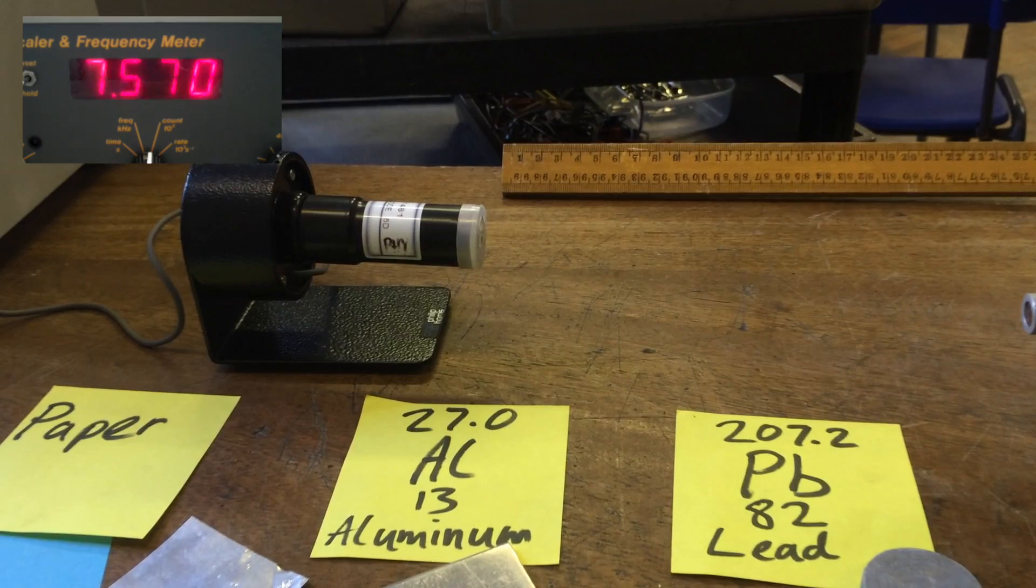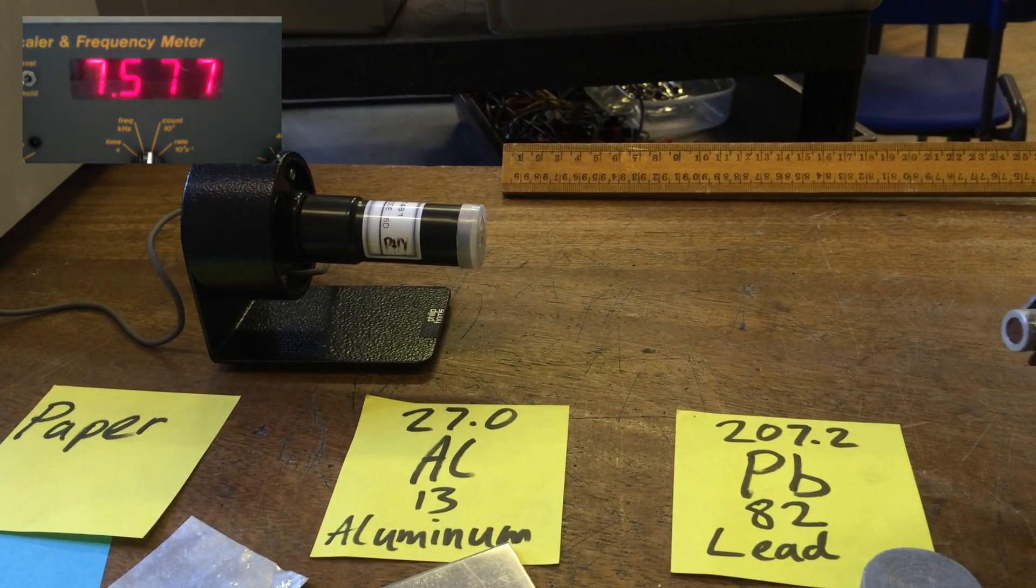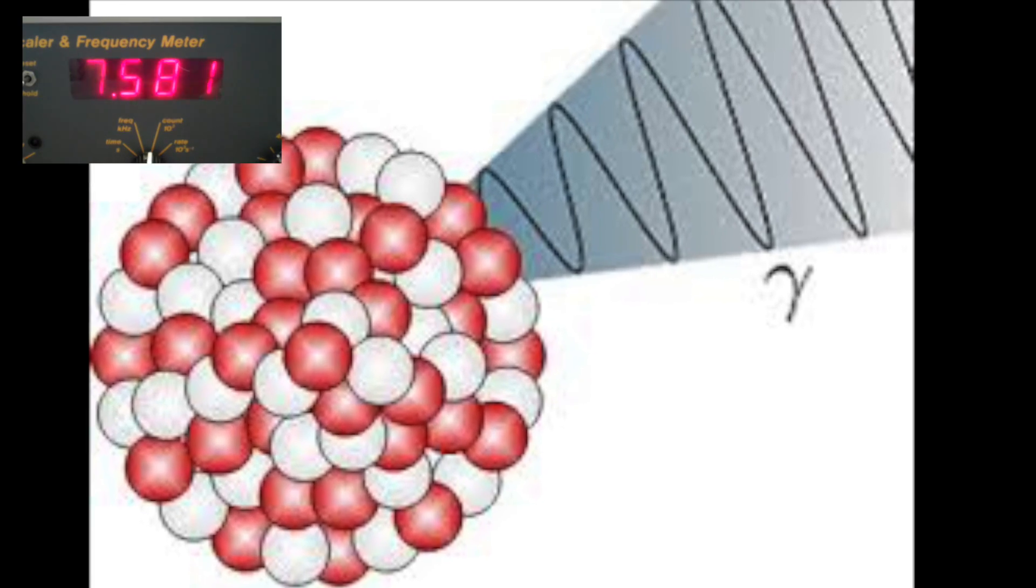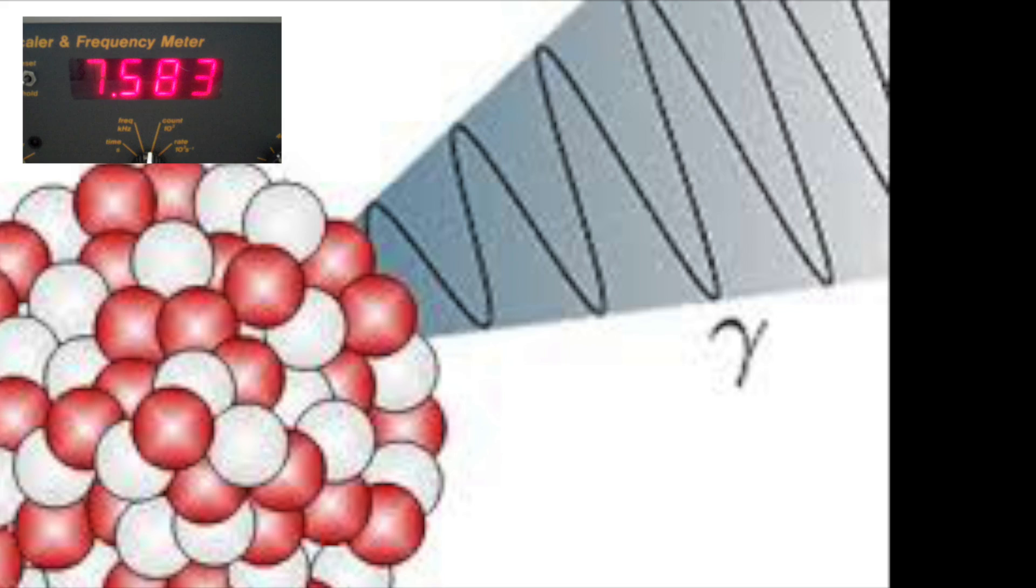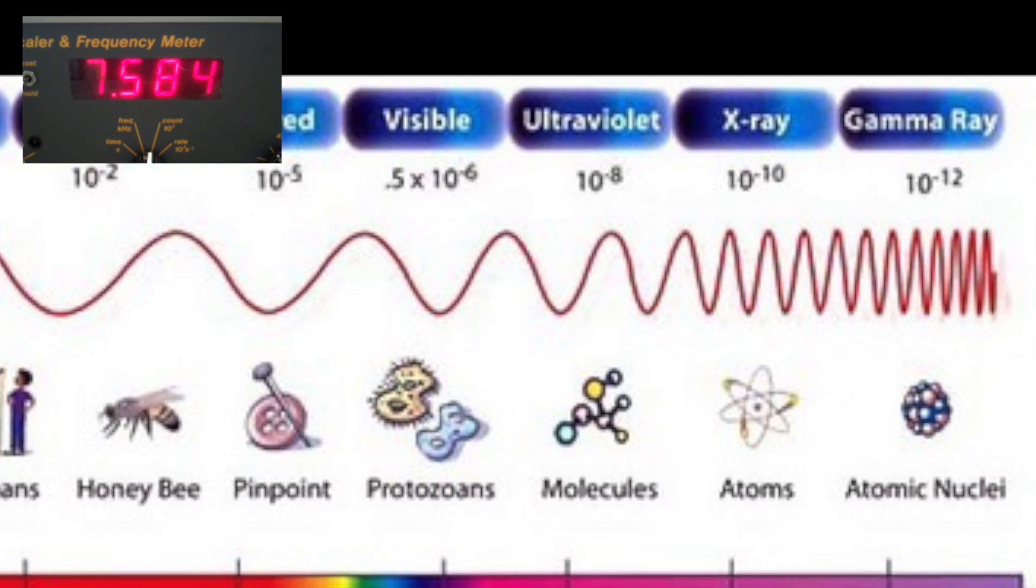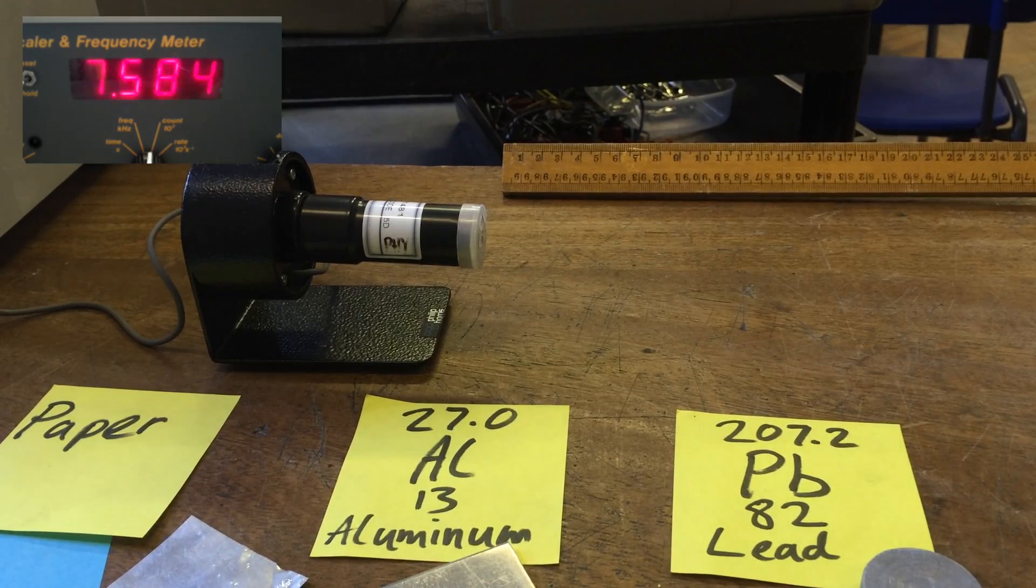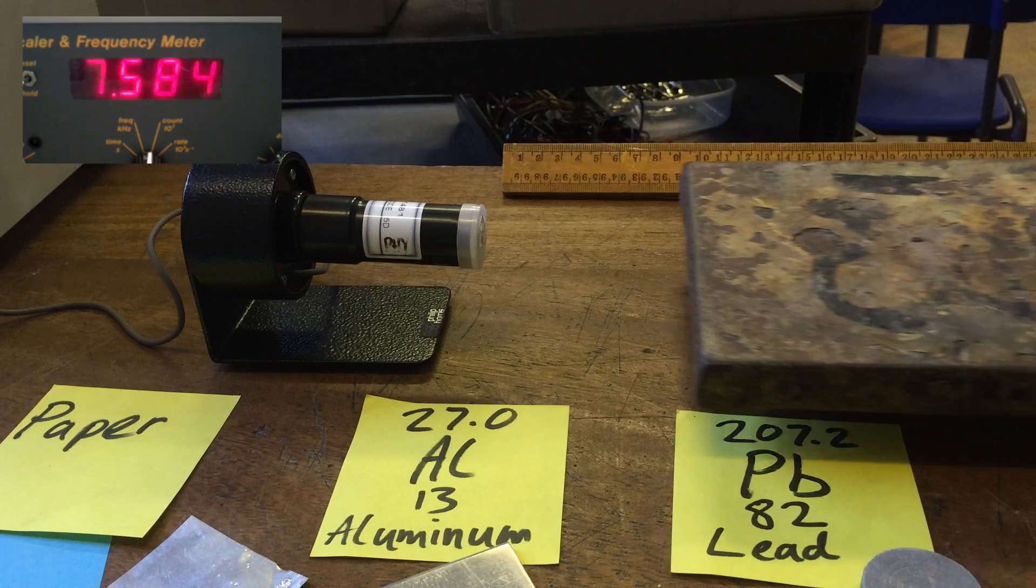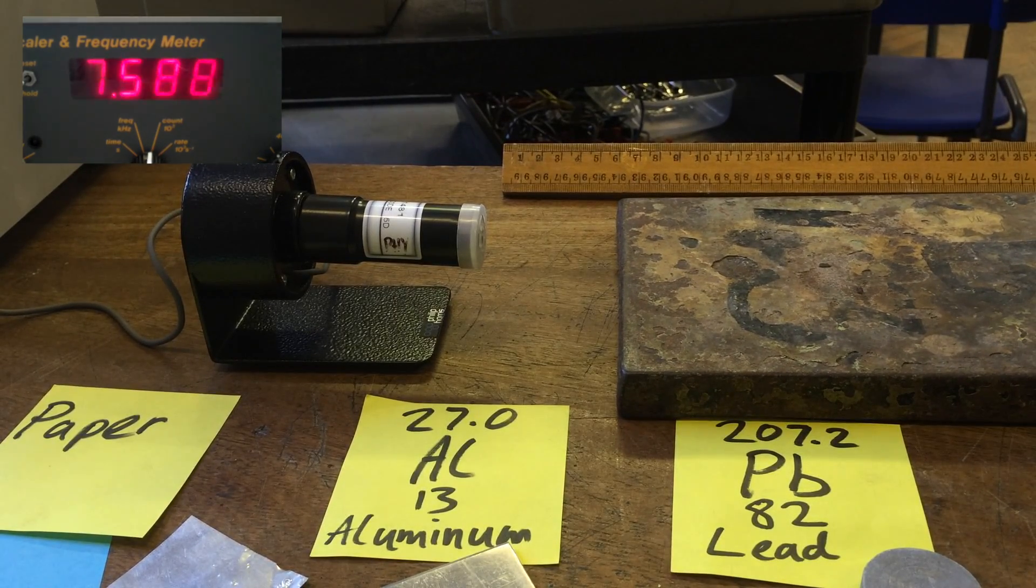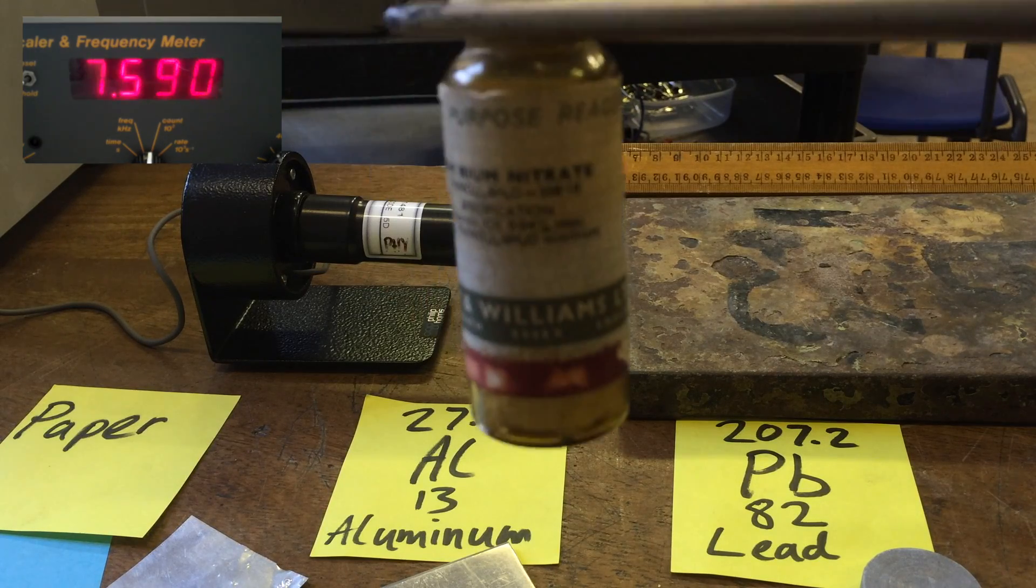Let's put the beta particles away now, and the final one that we need to discuss is gamma rays. Gamma rays are high-energy photons, so they're not a particle but they're photons, part of the electromagnetic spectrum. We're going to demonstrate this using a compound called thorium nitrate.